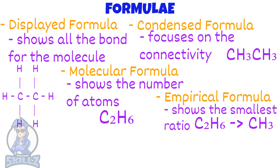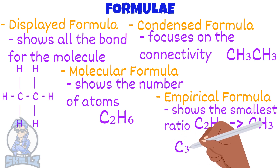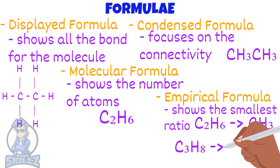Taking another example is propane, C3H8. What is its empirical formula? C3H8. It is already in the smallest ratio, so no more simplification is needed.